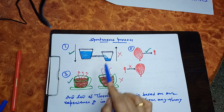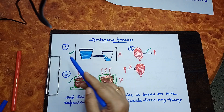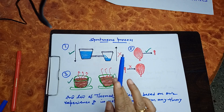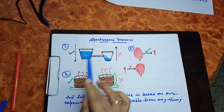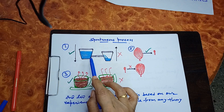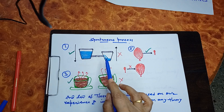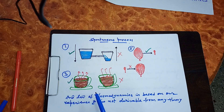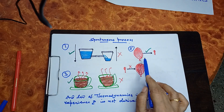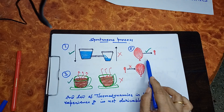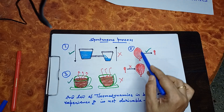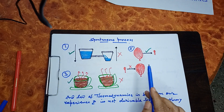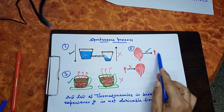According to the First Law, the reverse is also possible — kinetic energy converting to potential energy. But we know that spontaneously, water always flows from high level to low level. Now, here is a balloon filled with gas. If it leaks, the gas comes out of the balloon spontaneously and the balloon will shrink.